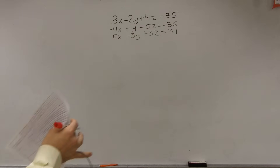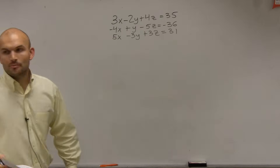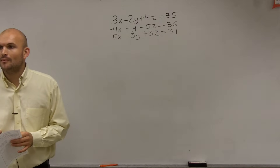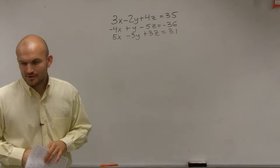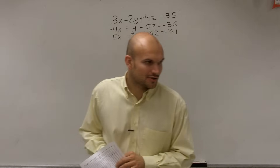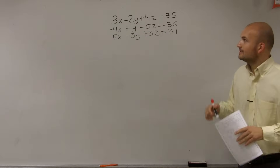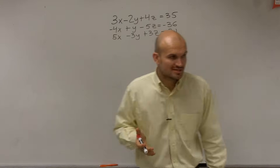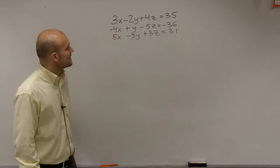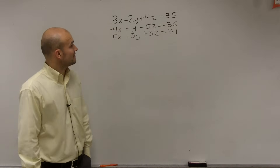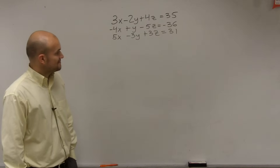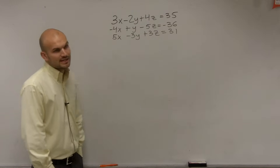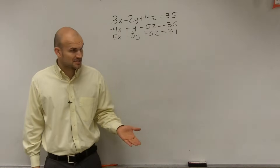Okay, so this is going to take a little bit, but once we get through this, you guys are going to pick up speed. So what we have here, ladies and gentlemen, is a three-variable system: 3x minus 2y plus 4z equals 35, negative 4x plus y minus 5z equals negative 36, and 5x minus 3y plus 3z equals 31. Notice we have three variables and three equations.